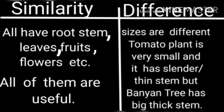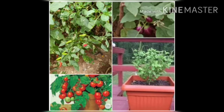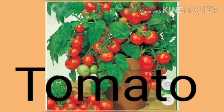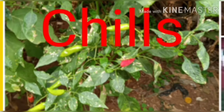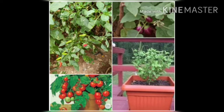Tomato plant is very small and it has slender or thin stem. But the banyan tree has big thick stem. Plants like tomato, tulasi, brinjal, chillies — we can observe that they are small. Small plants are called herbs.